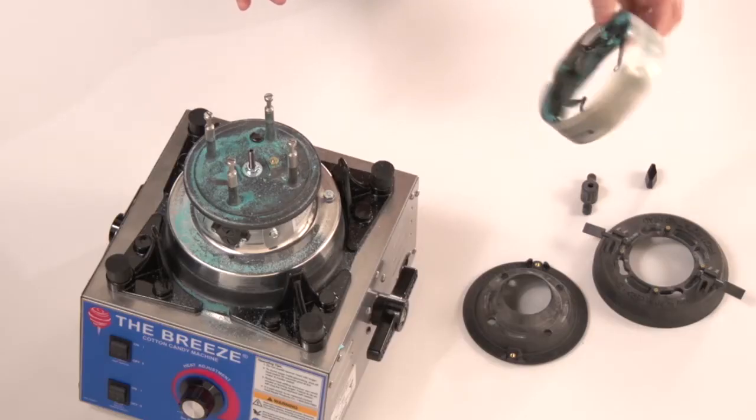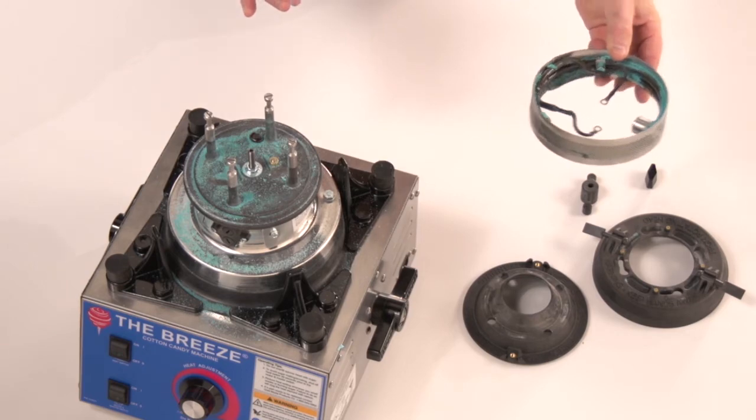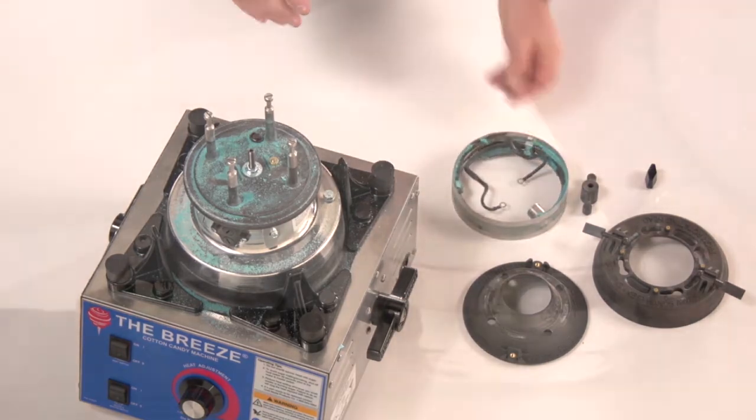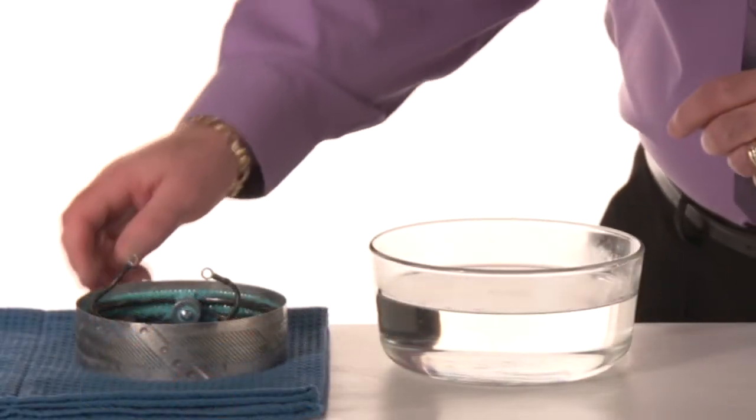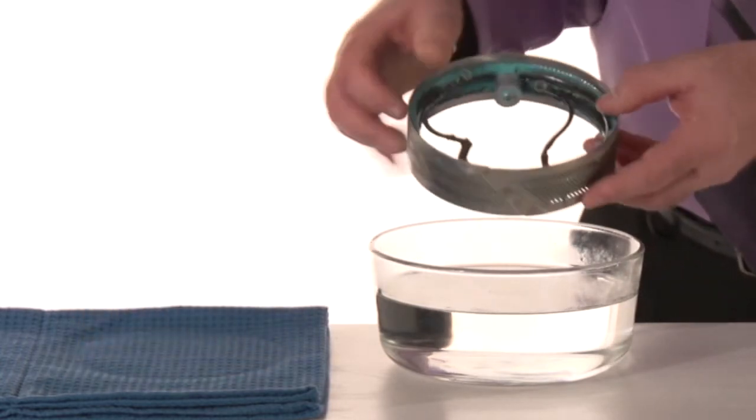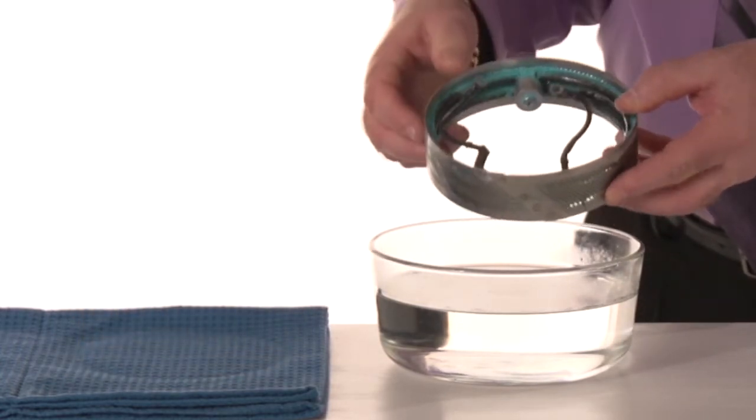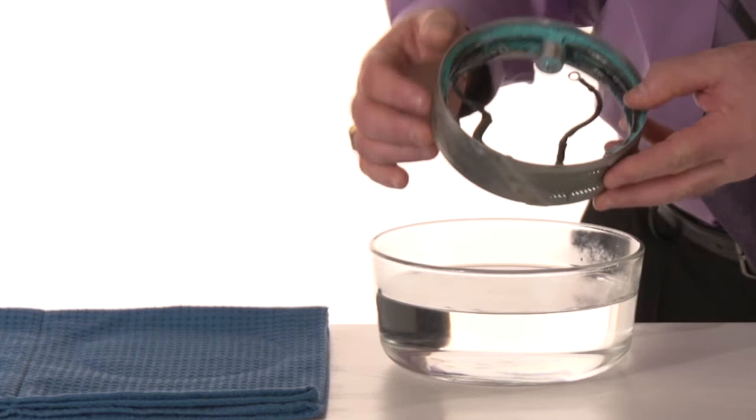This is the most critical part that needs to be cleaned. To clean the heat element, we're going to want to remove all of this sugar buildup from the inside of the heat element and the outside of the band.